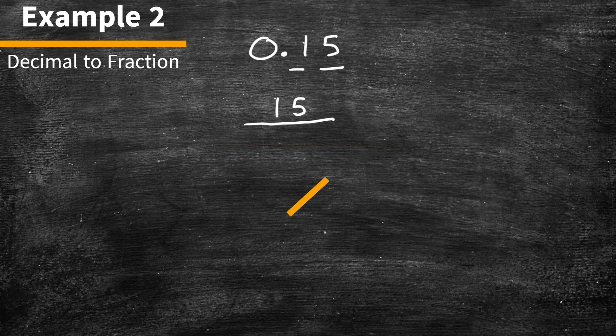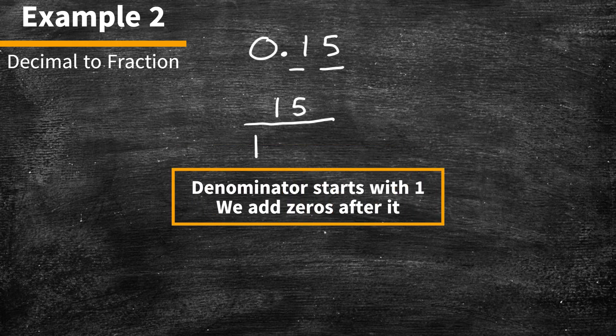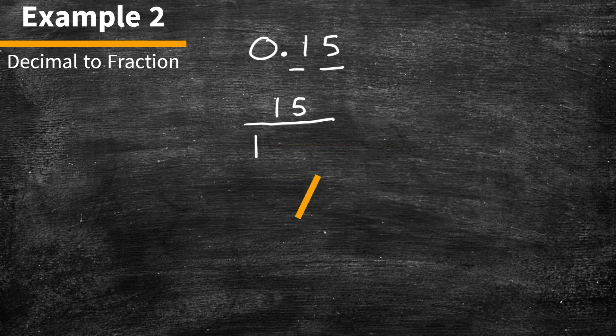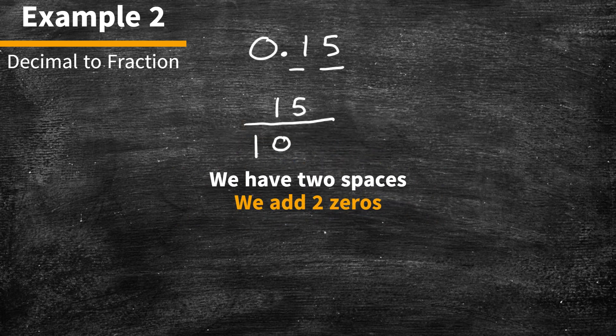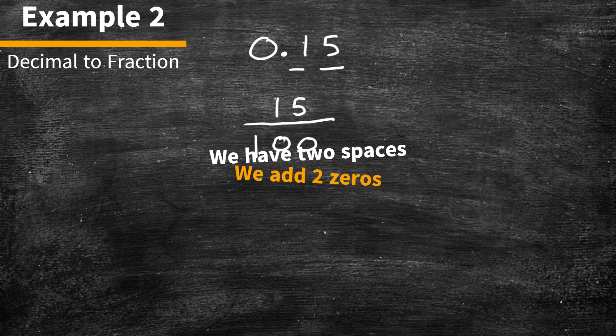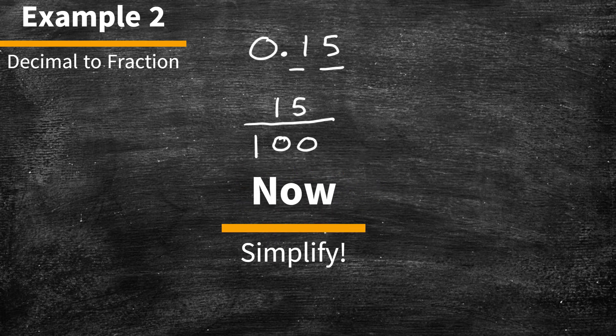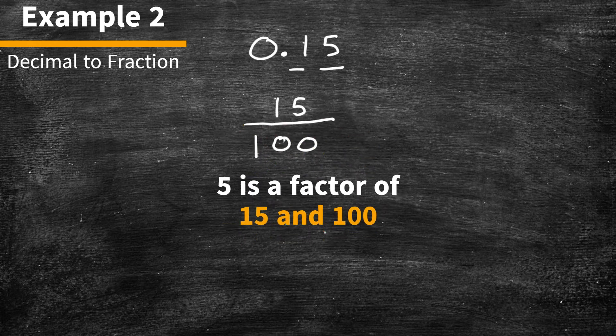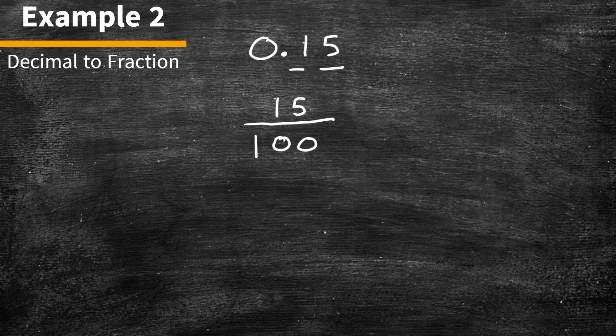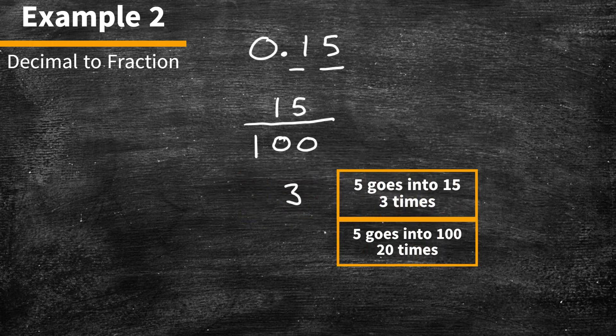Our denominator is always going to start with 1. And now, since we have 2 spaces, what we do is we add 2 zeros next to it. So now we have 15 over 100. From here, what we do is simplify. We know that 5 can go into 15, and 5 can also go into 100. If we were to factor out a 5, what we have left over is 3 over 20.